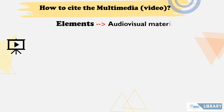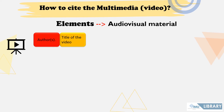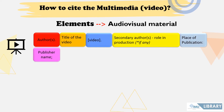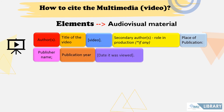To cite a video, write the author's name, followed by the title of the video, then include the word 'video' in square brackets. After that, add the secondary author if available, then place of publication, colon, space, publisher name, semi-colon, publication year, and viewed date in square brackets. Complete the reference with 'available from:' followed by a colon and the web address for the video.